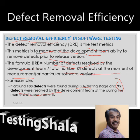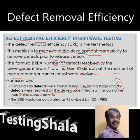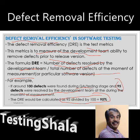that means the defect removal efficiency is 95 percent. The developer was able to fix more than 95 percent of the defects before releasing the product to the customer. This is very good efficiency from the development team, and that is how we measure defect removal efficiency.